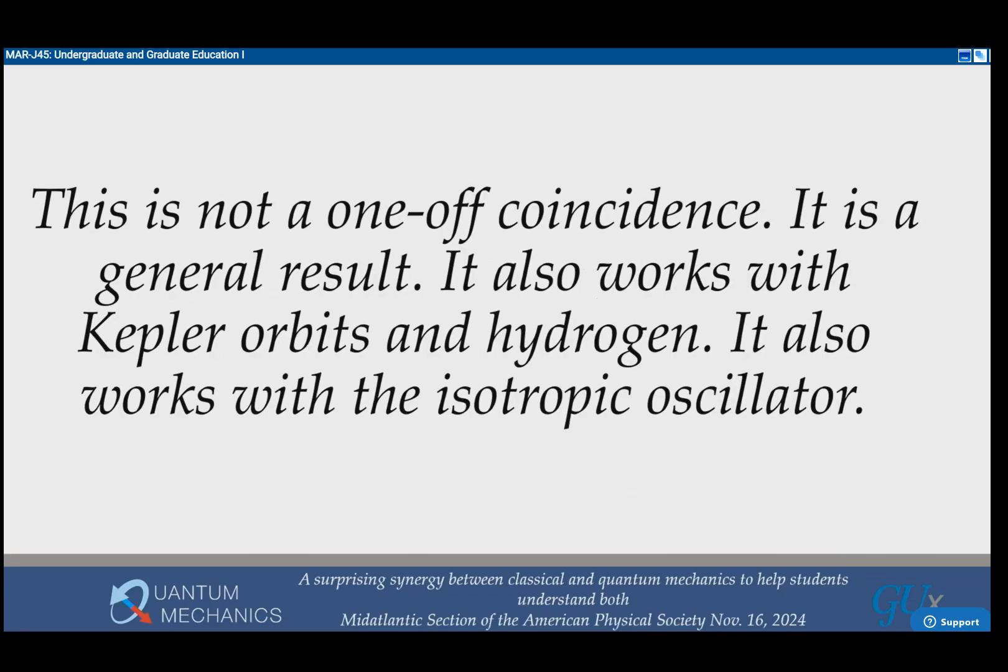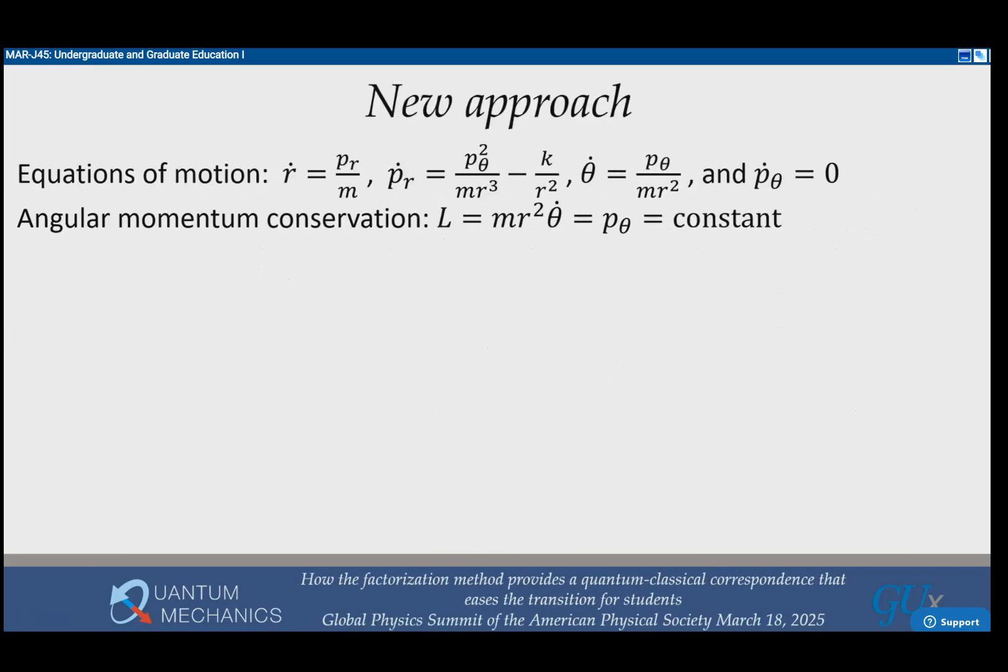This isn't just something that works for the harmonic oscillator. It also works for Kepler orbits with hydrogen. For the Kepler problem, you have more complicated equations of motion, but the angular ones are simple because p theta dot is zero, which means the angular momentum m r squared theta dot is a constant. You can use that to simplify the equation so you just work with the radial equations.